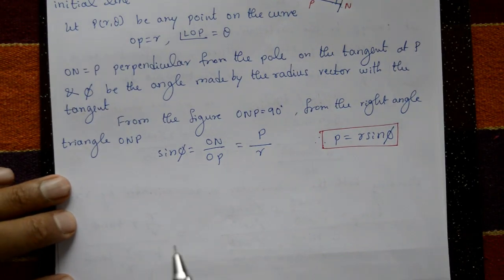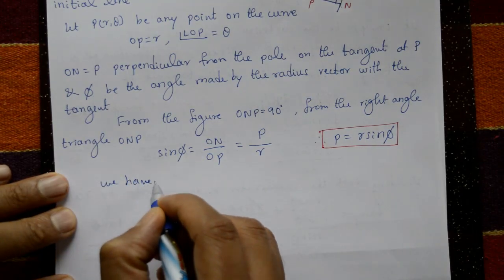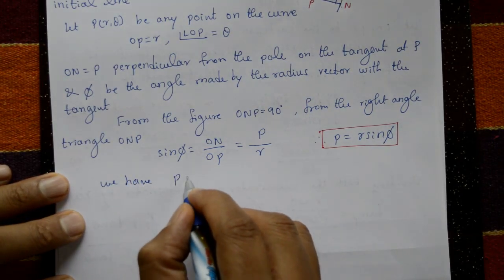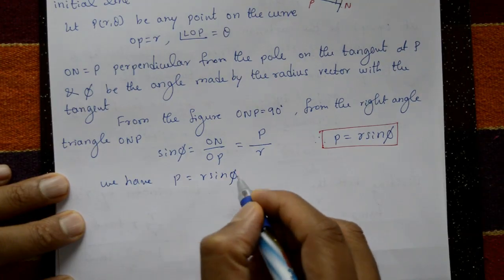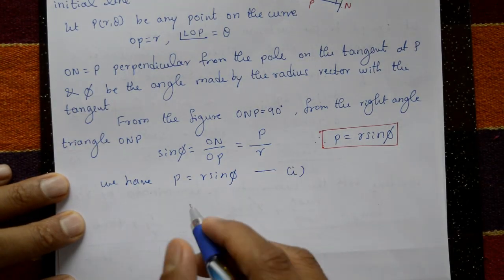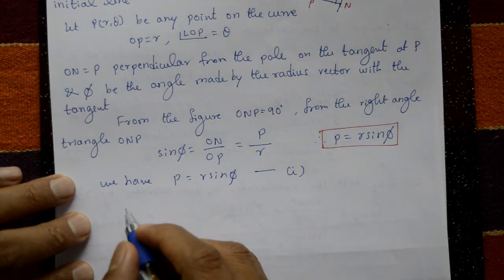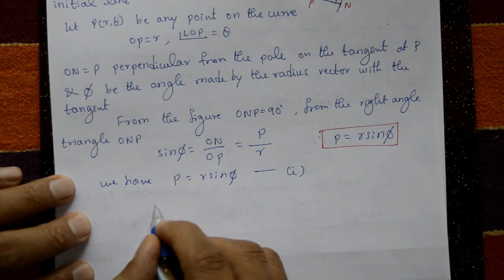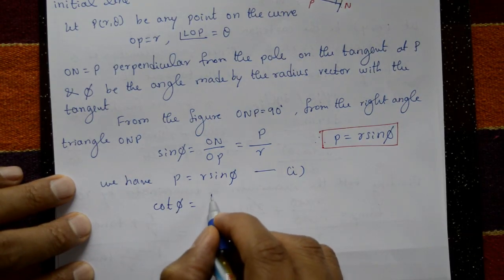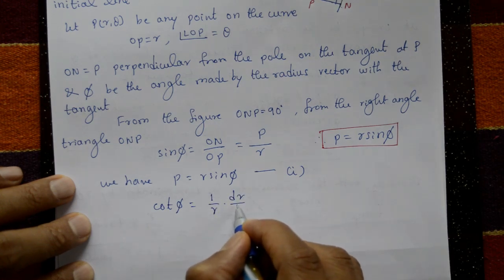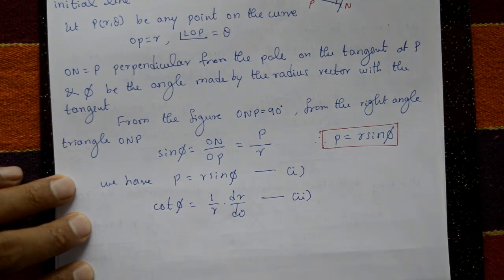So we have: equation one: p = r·sinπ. And from the already proven result, equation two: cot π = (1/r)·(dr/dθ).